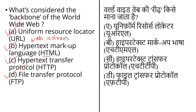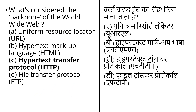The last option is File Transfer Protocol, that is FTP. FTP is a standard communication protocol used for the transfer of computer files from a server to a client on a computer network. FTP is built on the client-server model using separate control and data connections between the client and the server. The World Wide Web uses Hypertext Transfer Protocol — HTTP — in web addresses as the basis for communicating and distributing information. So the correct answer is option C: HTTP is considered the backbone of the World Wide Web.